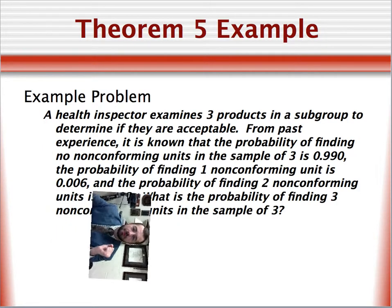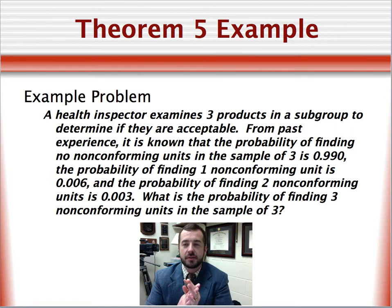Okay, so the last problem for the day. Suppose a health inspector examines three products in a subgroup to determine if they're acceptable. From past experience, it is known that the probability of finding no non-conforming units in the sample of three is 0.990. The probability of finding one non-conforming unit is 0.006. And the probability of finding two non-conforming units is 0.003. What is the probability of finding three non-conforming units in the sample of three? Take a minute to figure this one out.